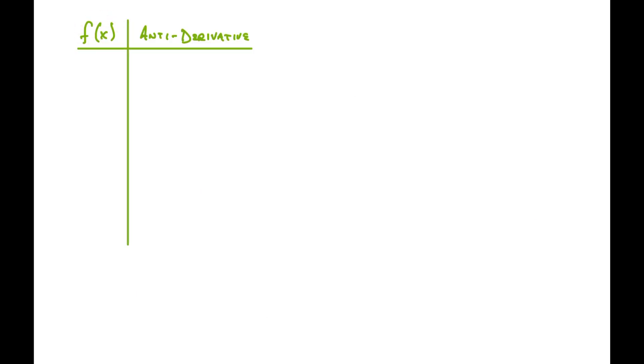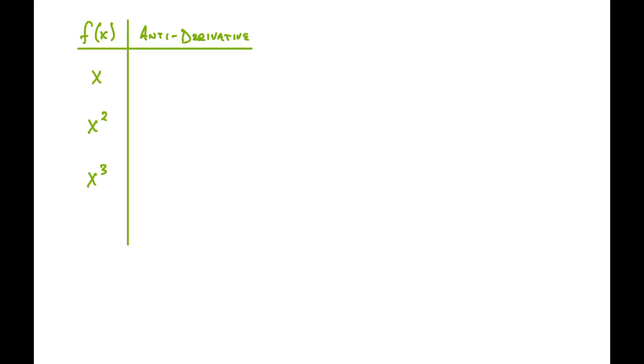So how do we get to these values? I'm going to put together some functions and find the anti-derivative to see if we can find a pattern. We're going to look at x, x squared, x cubed, and then make some generalizations. We know from the power rule that when we take a derivative, the power goes down by one. So by natural progression, if we go back up — taking the anti-derivative — the power is going to go up by one. So the anti-derivative of x is going to be x squared.